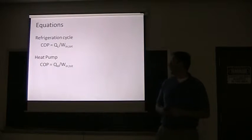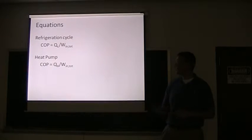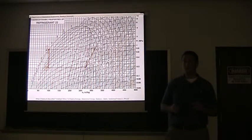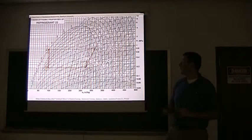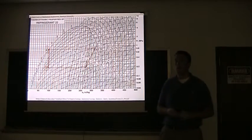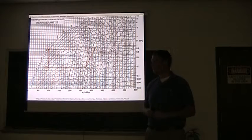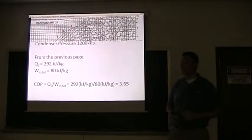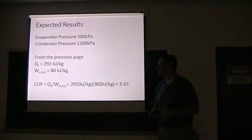The equations - coefficient of performance for the refrigeration cycle and the heat pump: QL over WN and QH over WN. Couldn't find the one that we technically posted in Moodle, so I grabbed this one from Stanford University. There's a thermodynamic table of Freon 22, which is what Freon we'll be using. We use this table in our calculations, or this chart in our calculations.